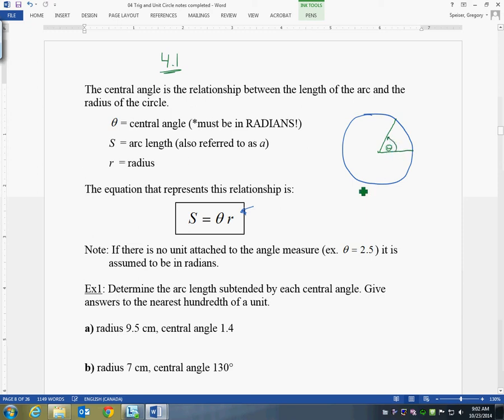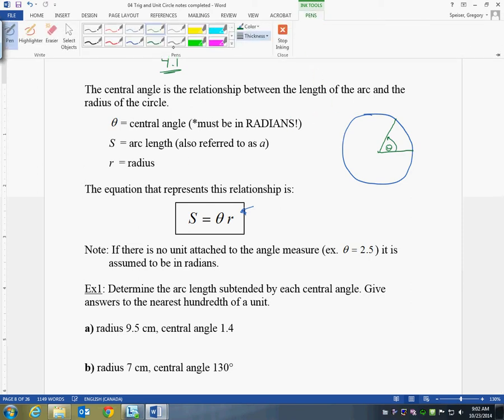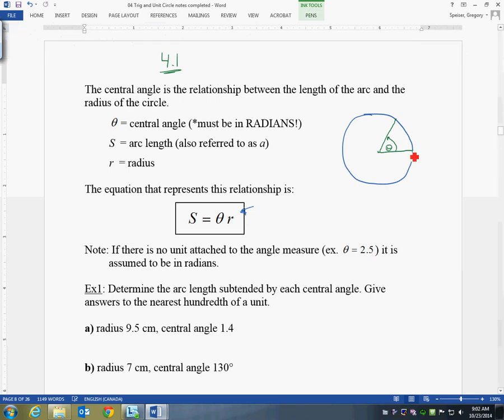So there is my angle. So it goes that amount there. The arc that is created by that angle on the circle, I'll make it in red, would be this part here.